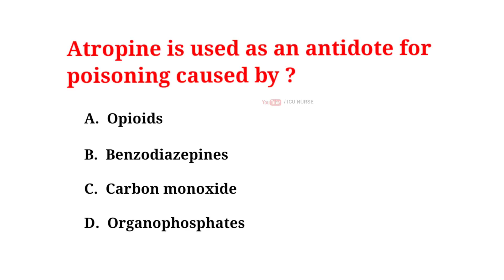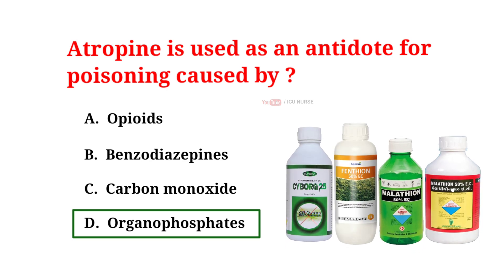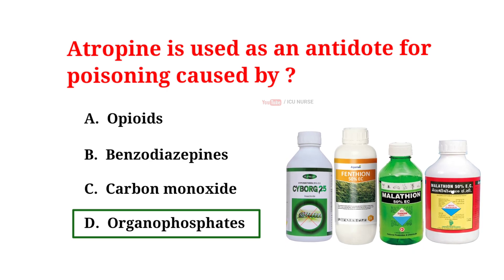Atropin is used as an antidote for poisoning caused by: A. Opioids, B. Benzodiazepines, C. Carbon monoxide, D. Organophosphates. The correct answer is D. Organophosphates. Atropin is the medication used as an antidote for poisoning caused by organophosphates.